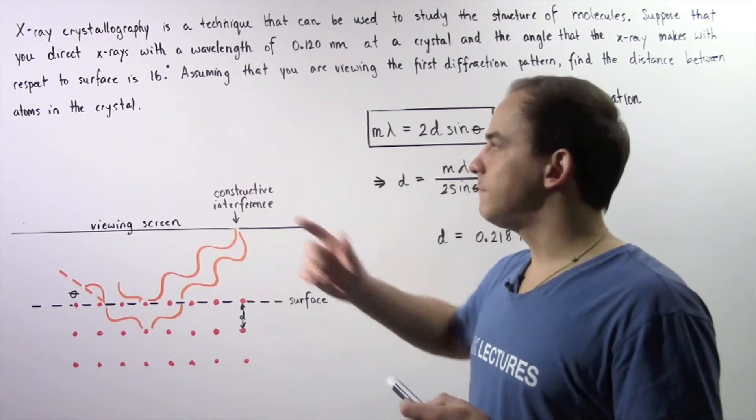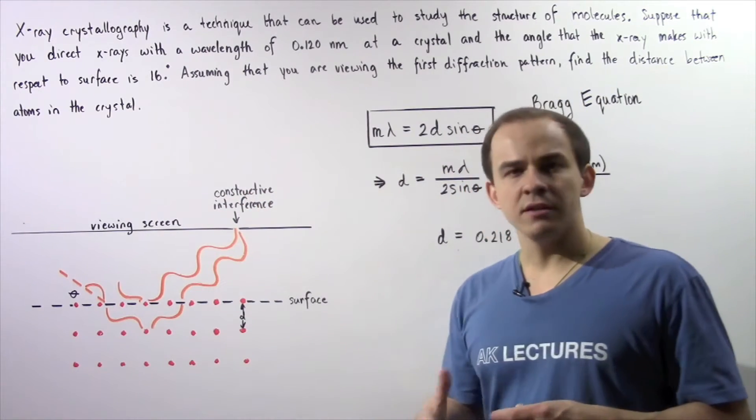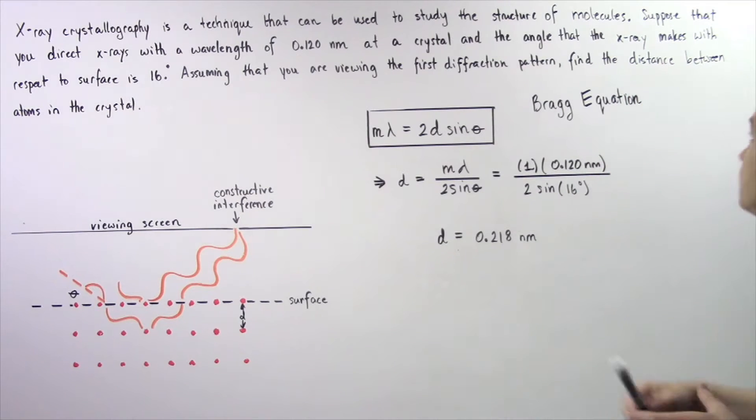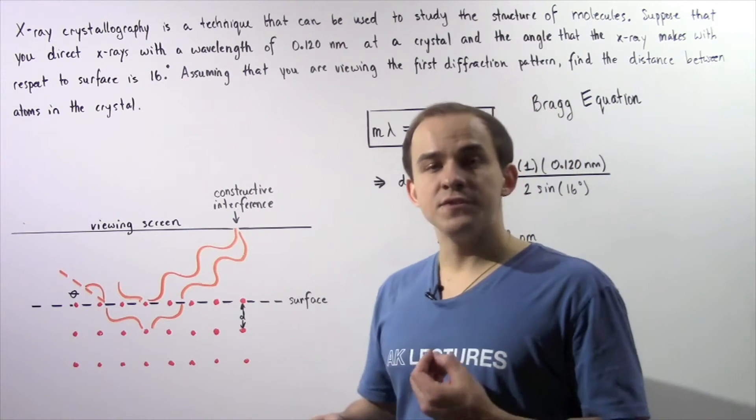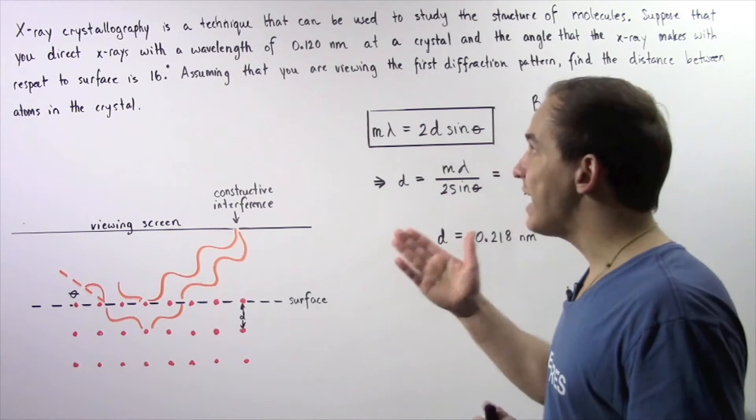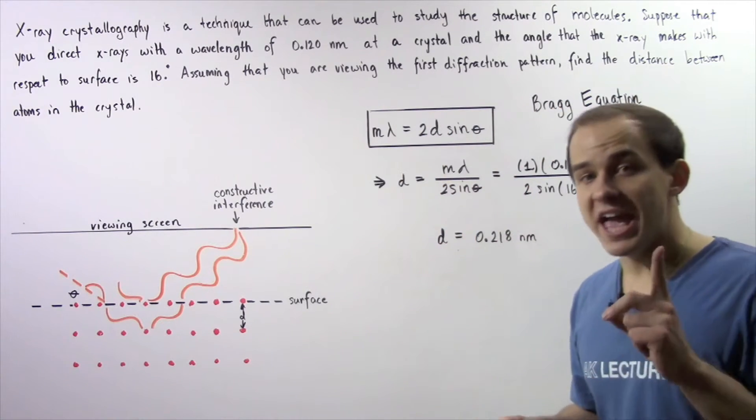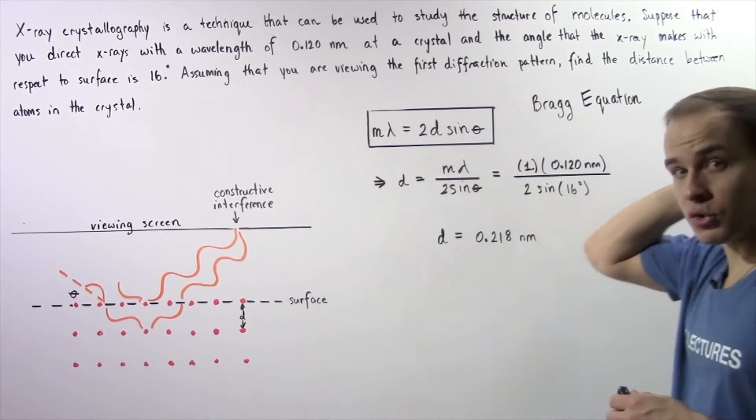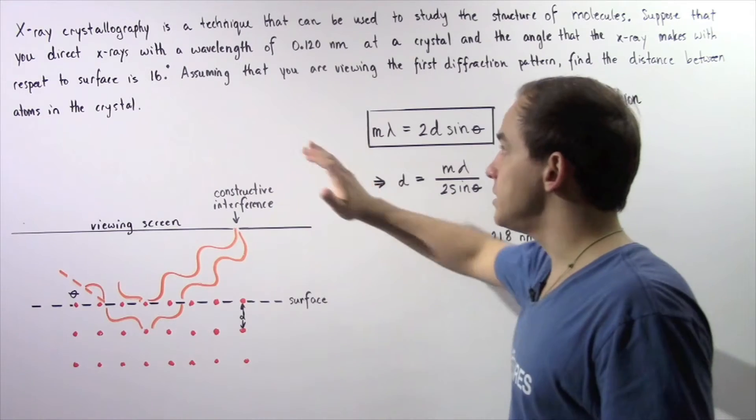Let's look at the following example that is a direct application of X-ray crystallography. Suppose that we direct X-rays with a wavelength of 0.120 nanometers at a crystal, and the angle that the X-ray makes with respect to the surface of the crystal is 16 degrees.